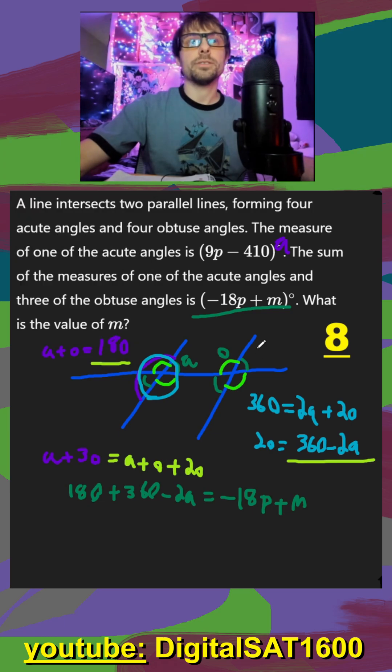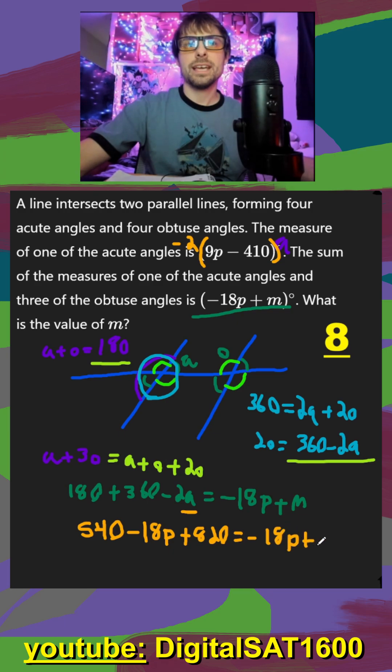All we have to do for our final step is we have to plug in what our A value is here. So we can add those two, that's just going to be 540. And then minus two, so we can actually just do the math up here, minus two, we're going to distribute. So it's going to be minus 18P. And then plus 820 is going to be equal to negative 18P plus M.